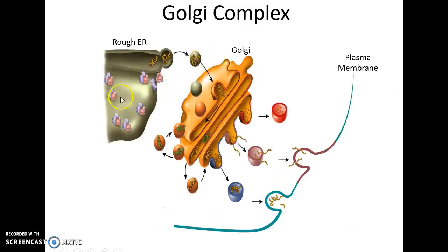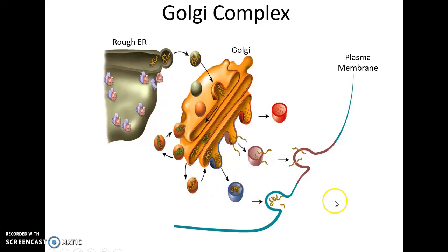The rough ER makes specialized proteins that travel by vesicle to the Golgi complex, which continues to modify and sort them — sending some to be secreted, some to become part of the plasma membrane, and some to become their own organelles.